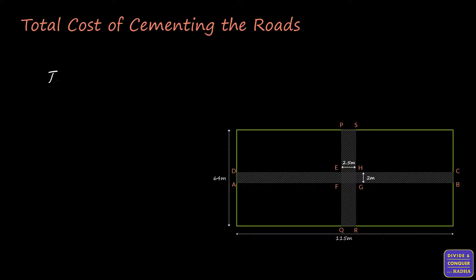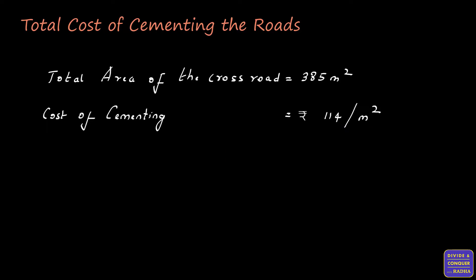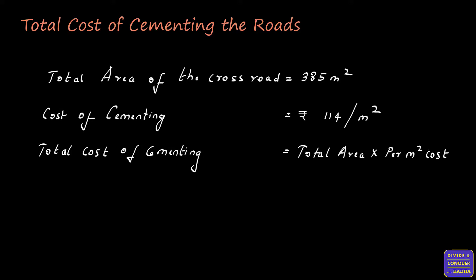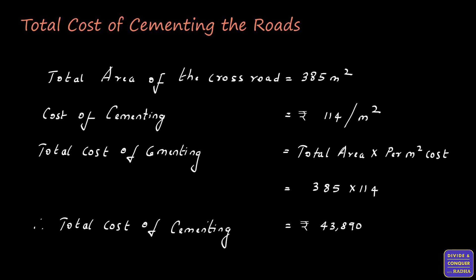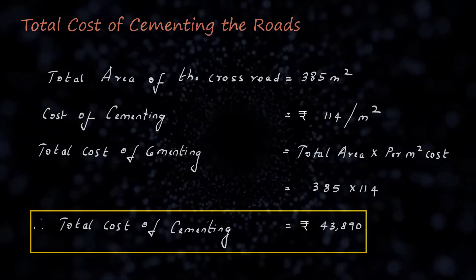Now let's calculate the cost of cementing the roads. The total area of the crossroads is 385 square meters, and the cost of cementing per square meter is rupees 114. Therefore, the total cost of cementing equals total area into per square meter cost, that is 385 into 114. On multiplying, we get rupees 43,890.